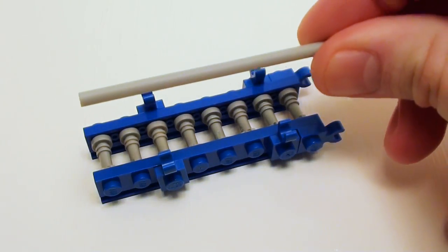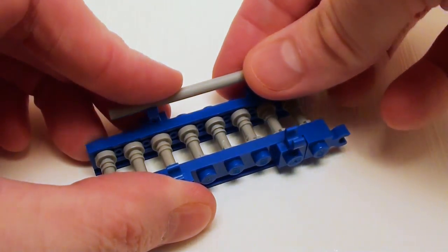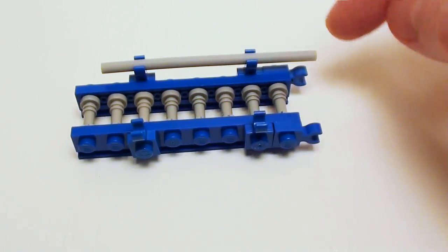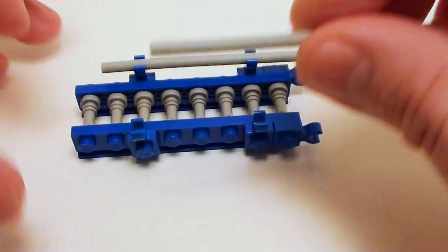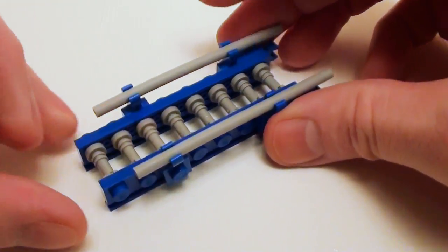Now let's take some eight stud long rods. We're going to place these inside the holders. I want to have it to where it's hanging over on this side by one stud. This is going to be used as our little grab bars for the ladder.